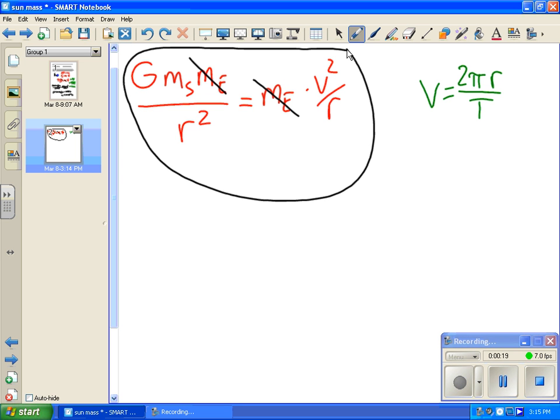force on the Earth equals mass times acceleration of the Earth. But the net force on the Earth is just gravity from the Sun, so big G times mass of Sun times mass of Earth over how far they are squared equals mass of Earth times acceleration of the Earth.